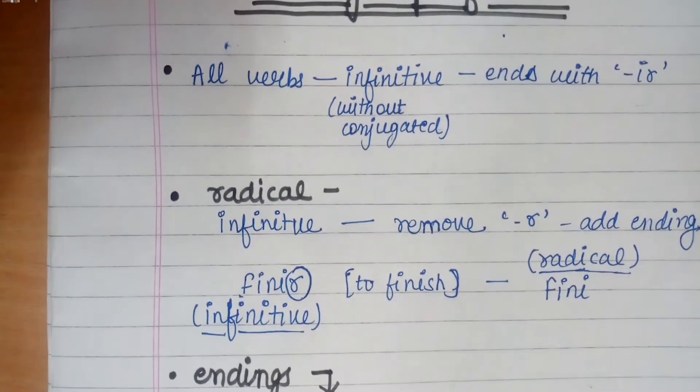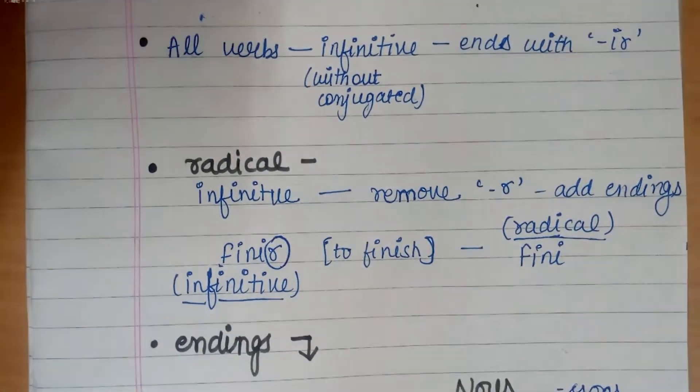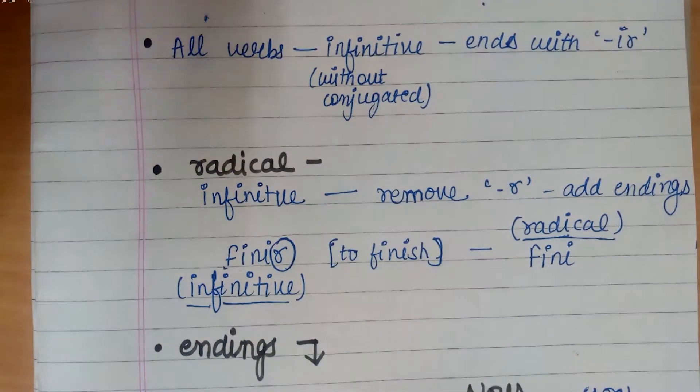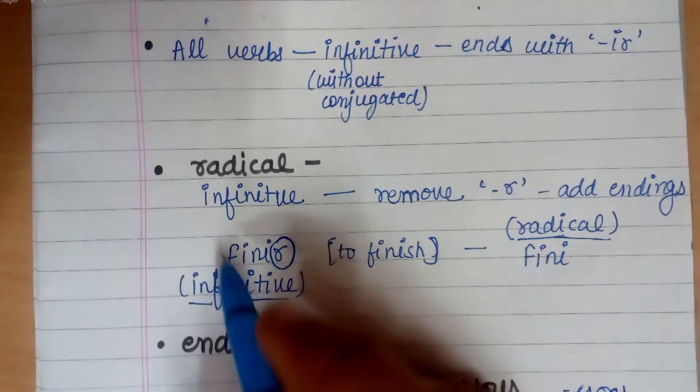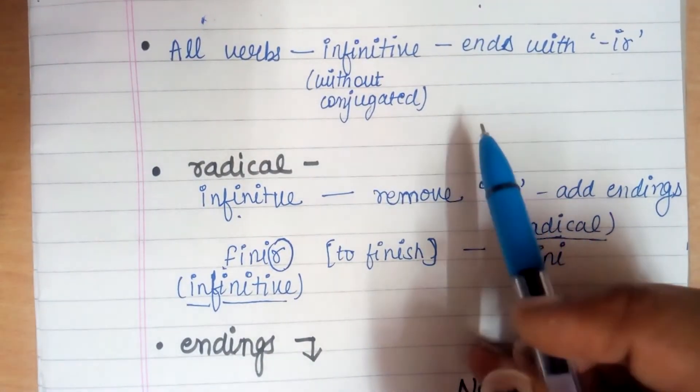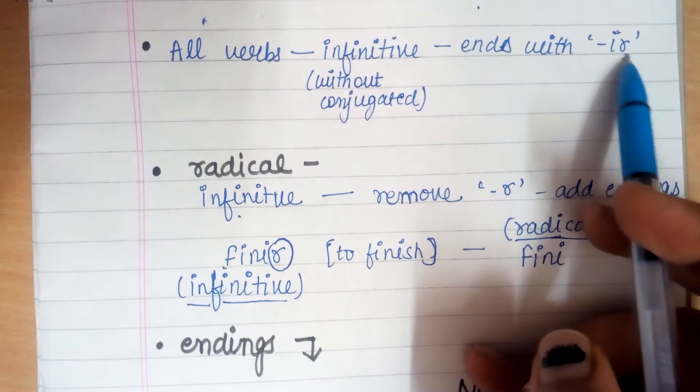The radical is formed when you remove the ER and add the ending. Similarly in this infinitive, we remove IR. If we remove IR from a verb, we remove IR and then we add endings.